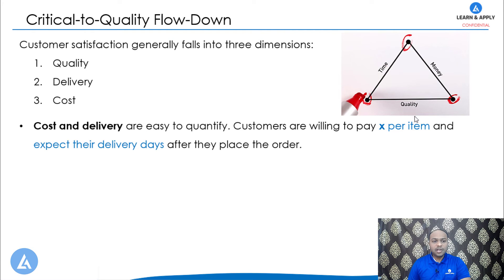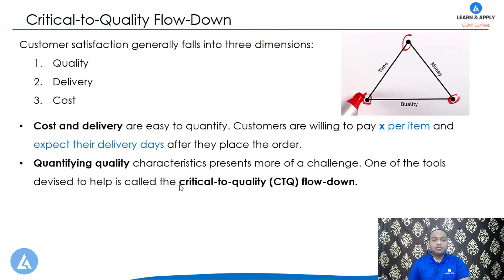If you look at all three points, cost and delivery are easy to quantify. For example, we can say that customers are willing to pay X per item and expect delivery Y days after they place the order. While if we talk about quality, quantifying quality characteristics presents more of a challenge, and therefore we are going to use the tool critical to quality, also called as CTQ flow down.